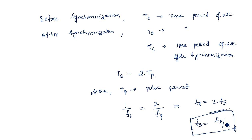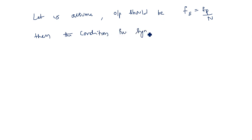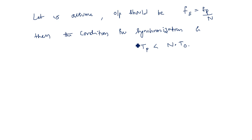We can also achieve division by 3, Fp/3, by 4, Fp/4, by 5, Fp/5, and so on. In general, if we want Fs equal to Fp/n, the condition for synchronization is that Tp must be less than n times T0. So Tp should be less than n times T0. This is the general condition for producing frequency division of oscillations.